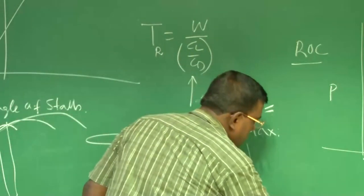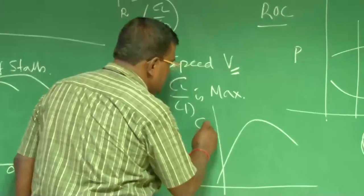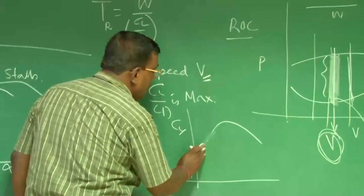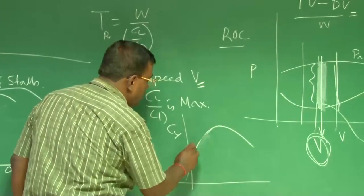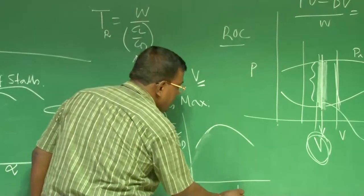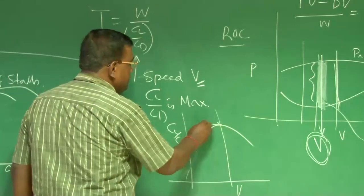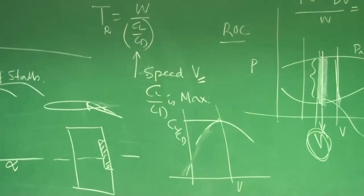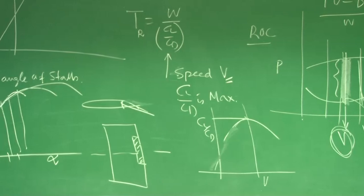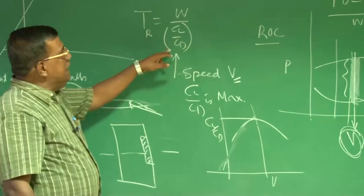So, if you could cross check your notes, if this is your CL by CD, CL by CD versus V, there is a particular V at which CL by CD is maximum. And just to revise you,